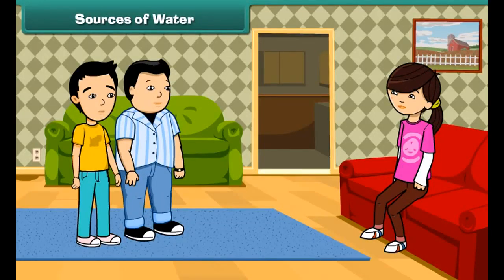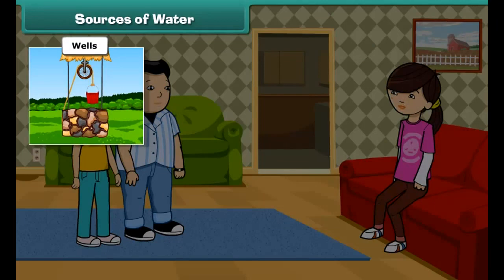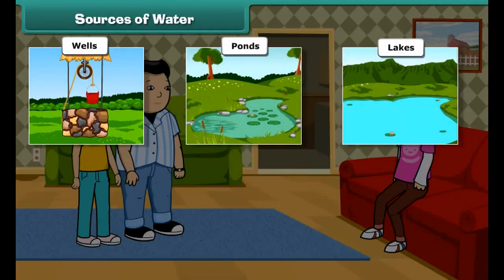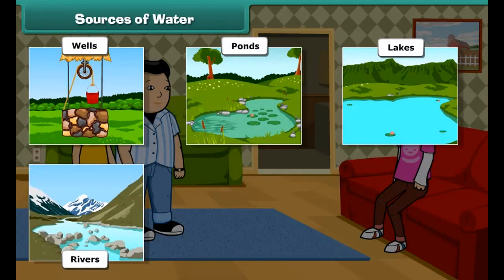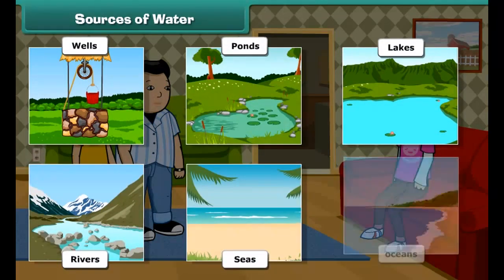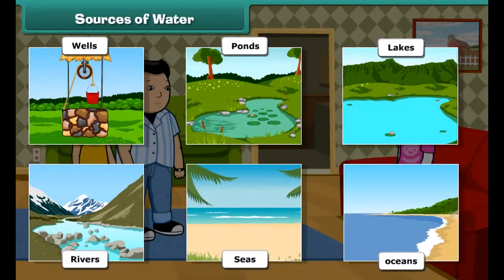Sister, from where can we get water? You are asking about the sources of water. Actually, water has a limited number of sources, like wells, ponds, lakes, rivers, seas and oceans. Besides these, groundwater is also an important source of water.